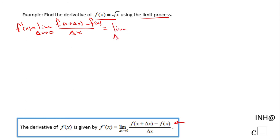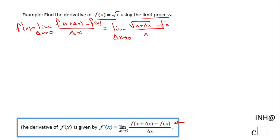So let's see what this limit becomes in our case. This is going to be: limit as delta x approaches zero of square root of (x + delta x) minus square root of x, over delta x. So how do we solve this limit?